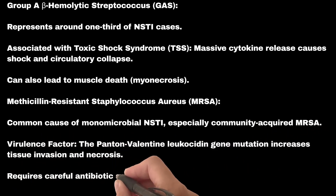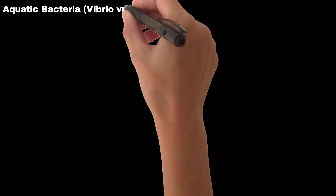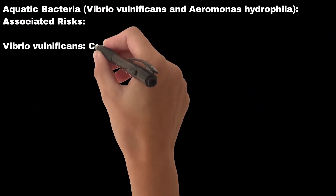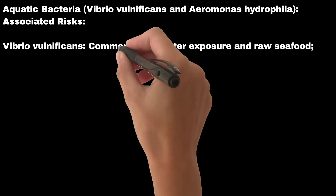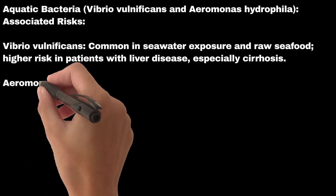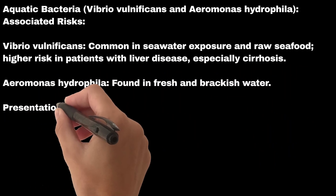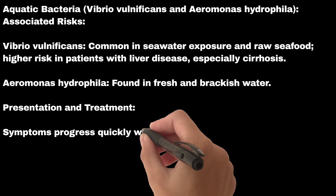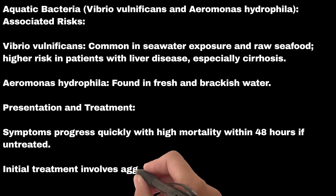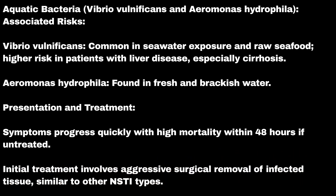Aquatic bacteria — Vibrio vulnificus and Aeromonas hydrophila: Vibrio vulnificus is common with seawater exposure and raw seafood, with higher risk in patients with liver disease, especially cirrhosis. Aeromonas hydrophila is found in fresh and brackish water. Symptoms progress quickly with high mortality within 48 hours if untreated. Initial treatment involves aggressive surgical removal of infected tissue, similar to other NSTI types.